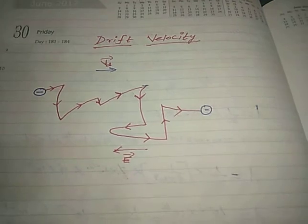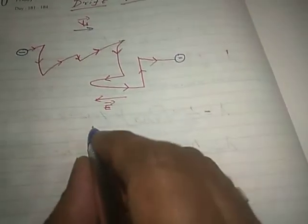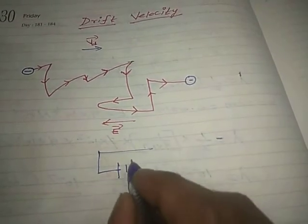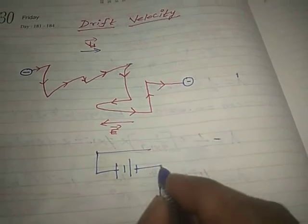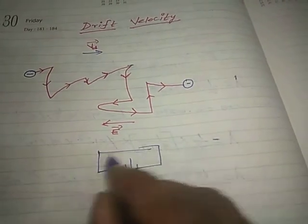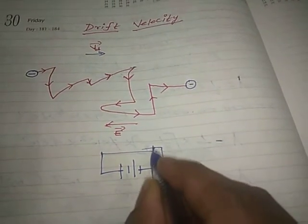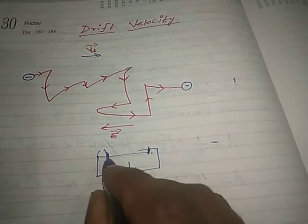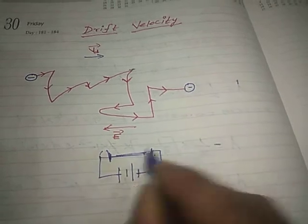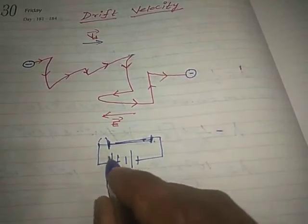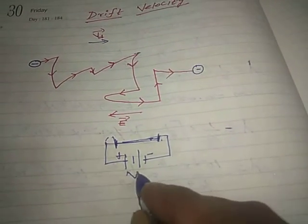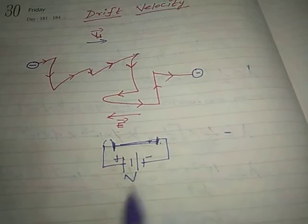When we connect a battery to a conductor, for example, a conductor is connected to a battery of voltage V. In the conductor, the battery is connected with plus and minus terminals. The battery has a voltage V.